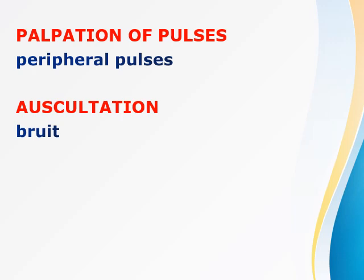Palpation includes assessment of peripheral and central pulses: apical, carotid, temporal, brachial, radial, ulnar, popliteal, dorsalis pedis, and posterior tibial pulses. The absence of a pulse proximal to a site may indicate the site of stenosis — narrowing or constriction. During auscultation, we assess for bruits, which signal aneurysm or turbulent blood flow within vessels.